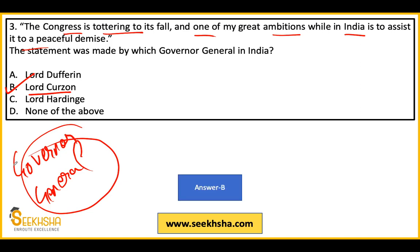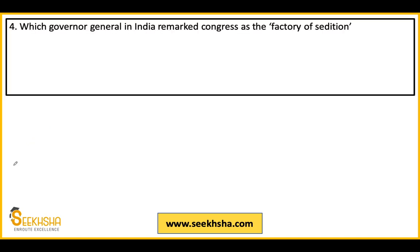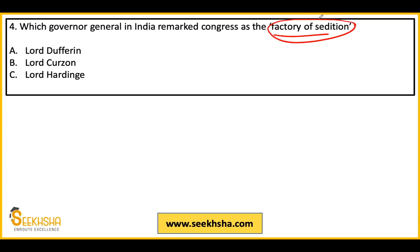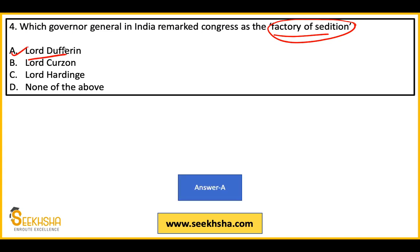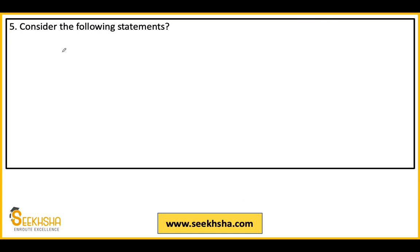So the answer here is option B — Lord Curzon. Moving to the fourth question: which Governor General in India remarked on Congress as 'the factory of sedition'? With the same options: in this case the answer will be option A — Lord Dufferin. So Curzon said he prays that Congress may fall before he leaves, and Dufferin called it the factory of sedition.